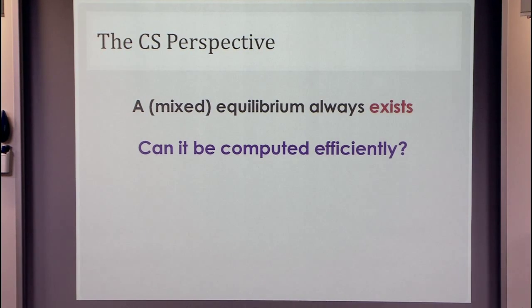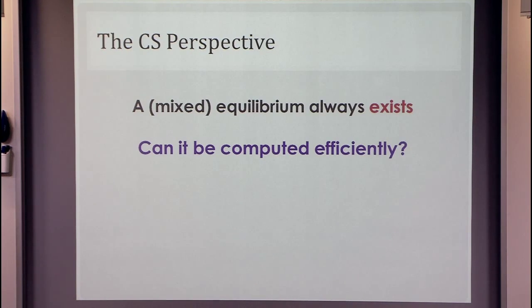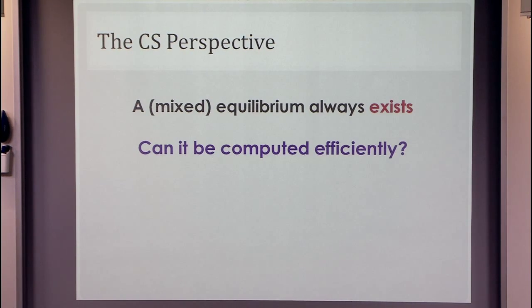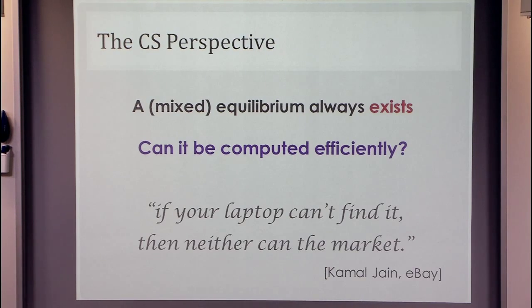Understanding the complexity of finding a Nash equilibrium is a fascinating question from a purely algorithmic perspective. But even beyond that, if we realize that finding a Nash equilibrium is an intractable problem, this would be a major drawback of Nash as a solution concept — as a way to predict the behavior of players in the real world. Putting this in the words of Kamal Jain: if your laptop can't find it, then neither can the market.